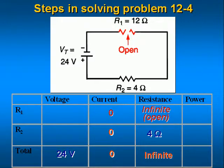The power dissipated by this circuit will be zero because the current is zero. The voltage across R1 will be the source voltage of 24 volts. If you were to place a voltmeter across R1 you would measure the source voltage of 24 volts. This is one good clue that you have an open resistor. If you are probing around a circuit and measure the source voltage across a resistor, look again — it may be open. The voltage across R2 is zero because it does not have any current flowing through it.